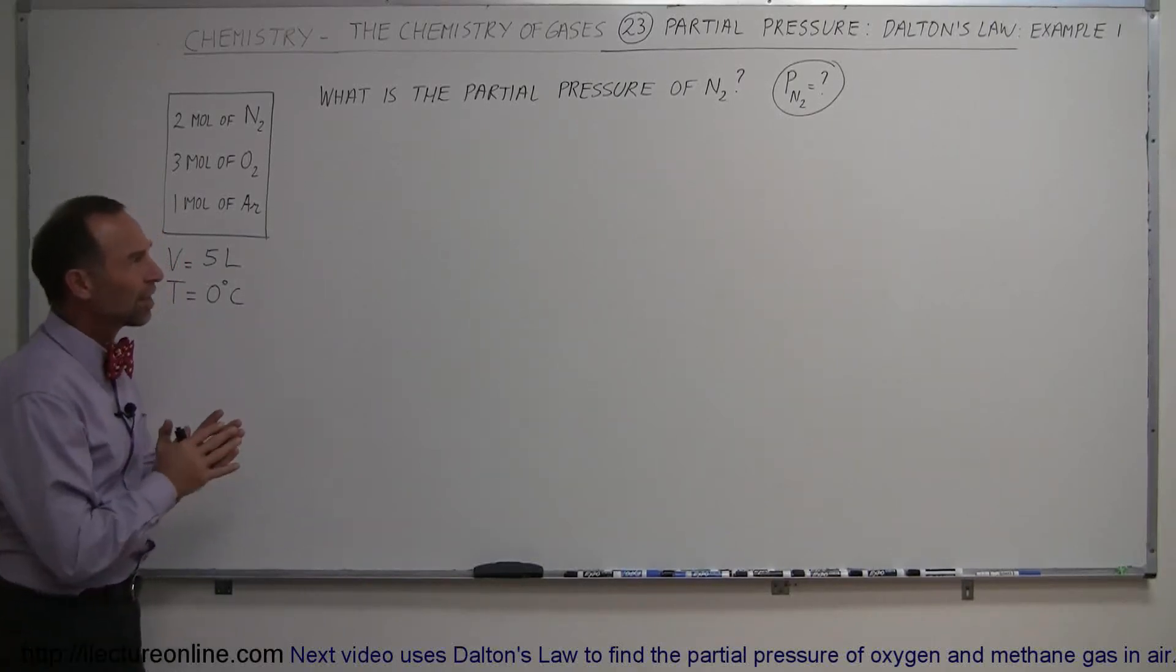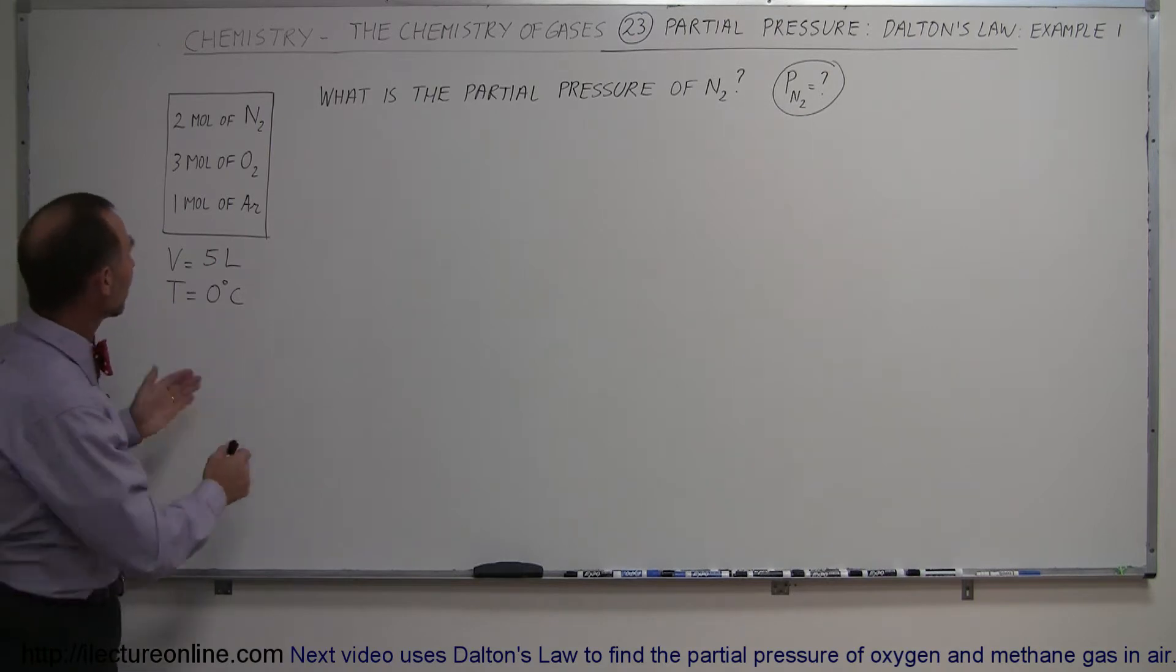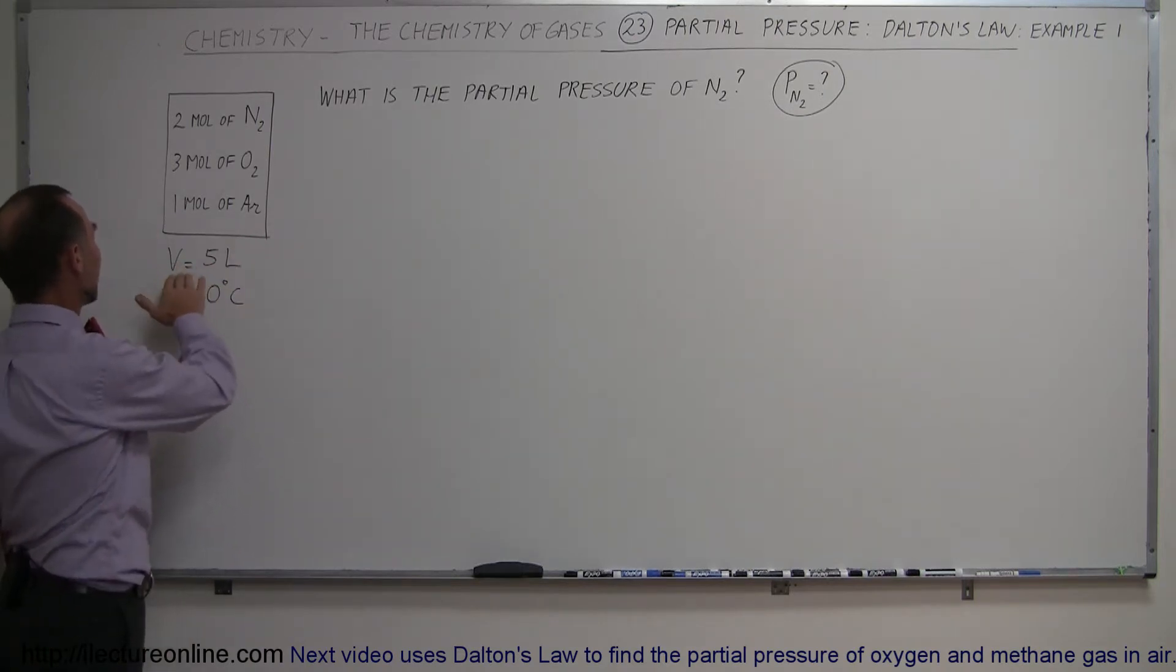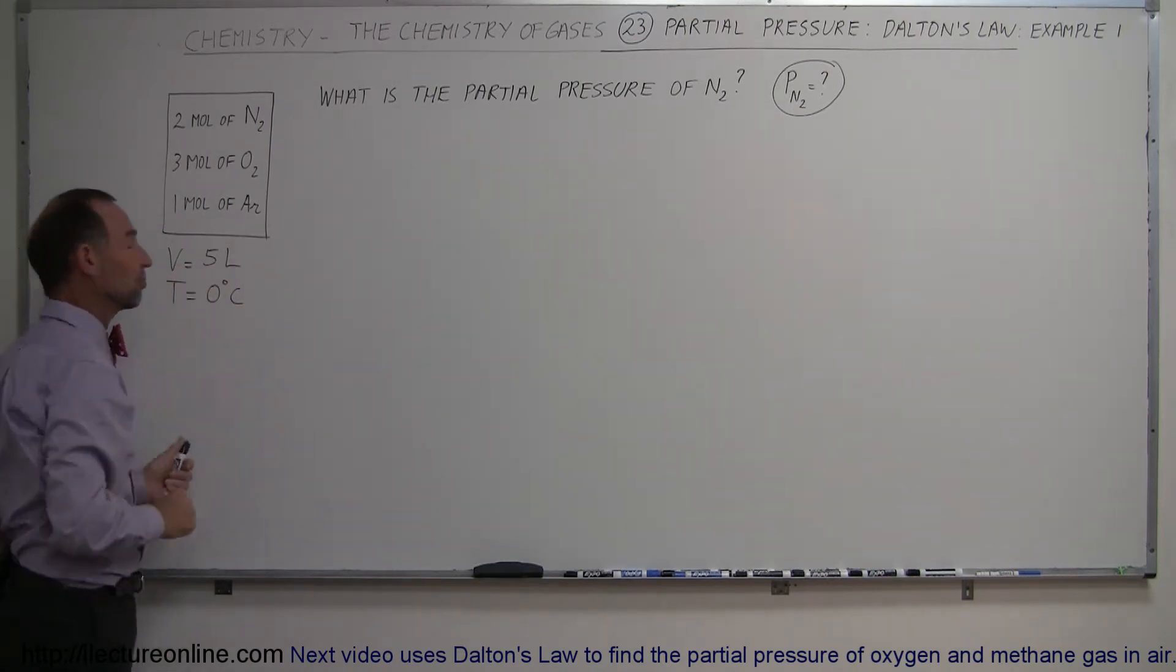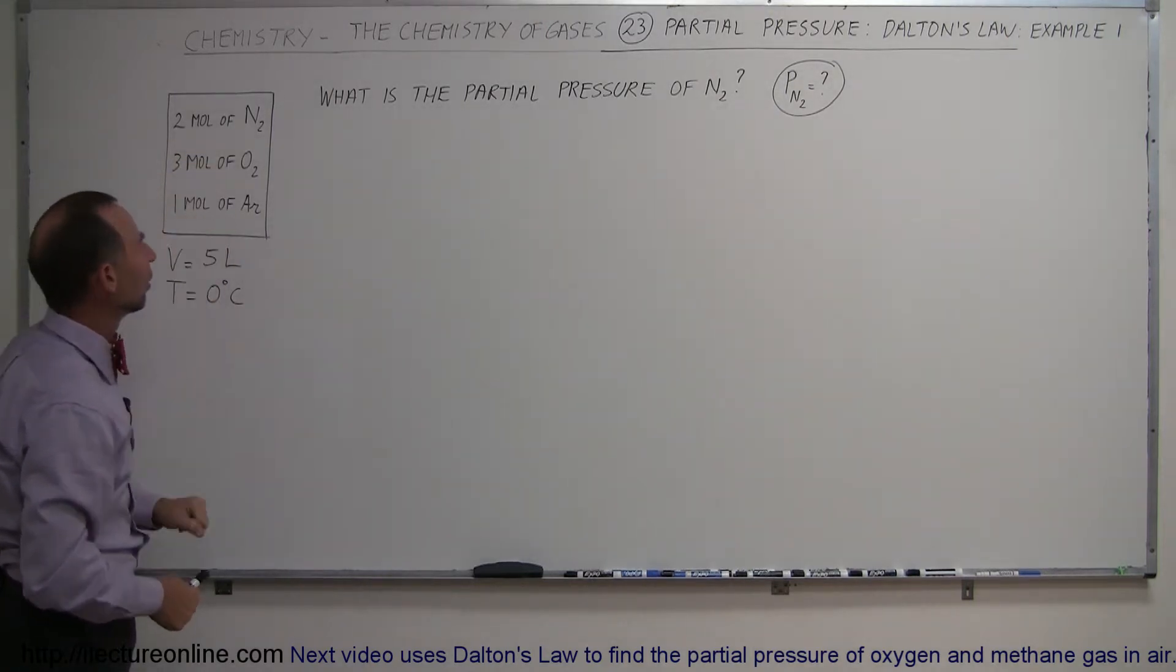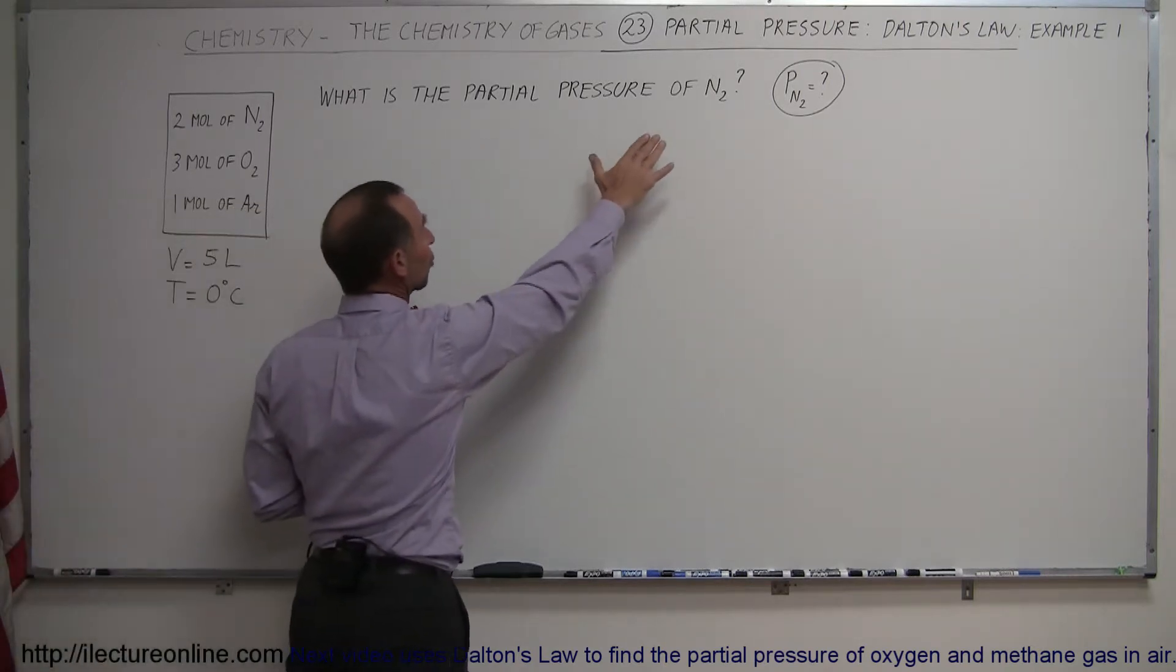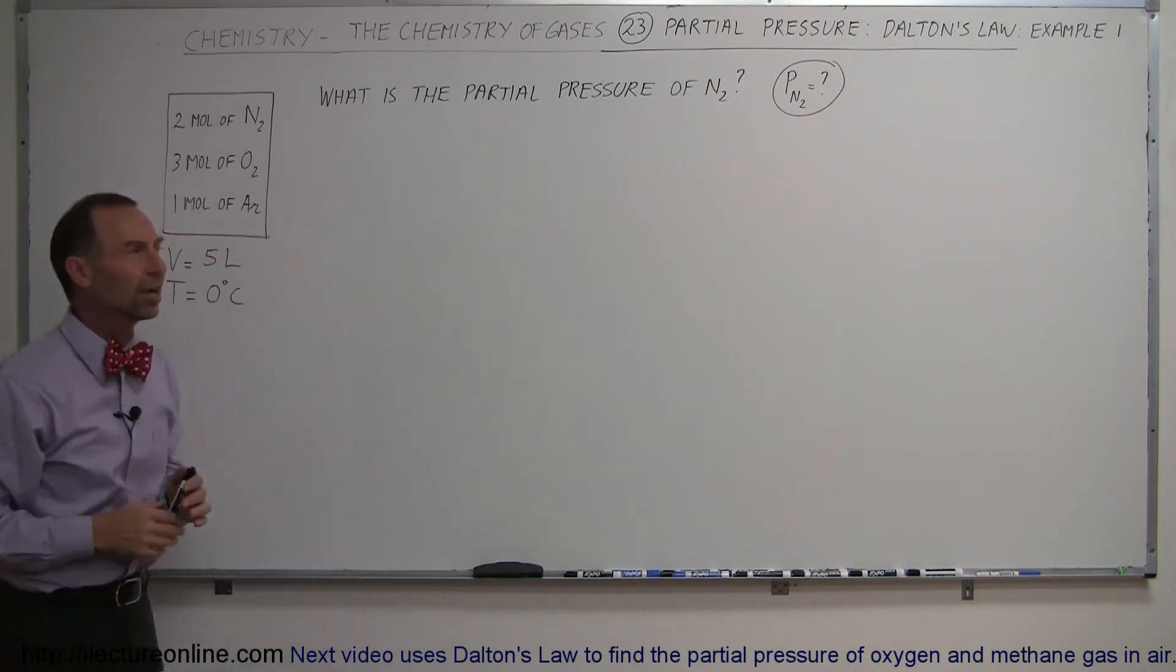And now, to make sure we understand the partial pressure in Dalton's Law, let's do an example. So here we have a container. Its volume is 5 liters. It's kept at a temperature of 0 degrees centigrade, and it contains 2 moles of nitrogen, 3 moles of oxygen, and 1 mole of argon. And the question is, what is the partial pressure of the nitrogen gas in this container?